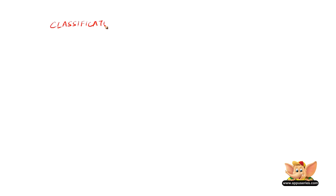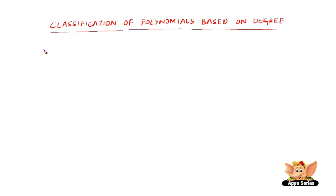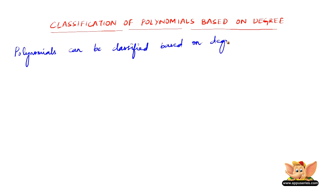Let us learn the classification of polynomials based on degree. Polynomials can be classified as Linear, Quadratic, Cubic, and Biquadratic.